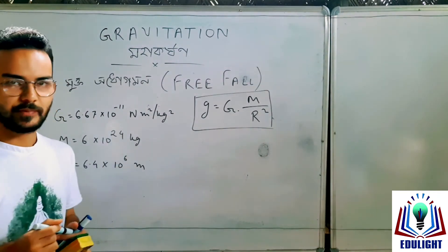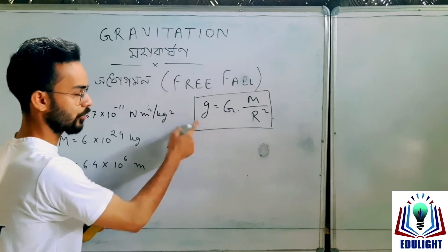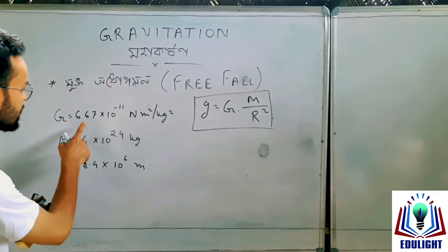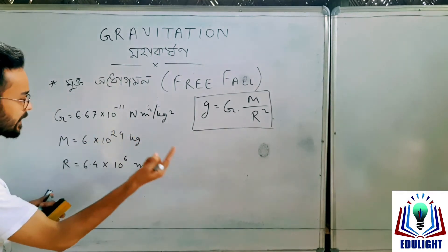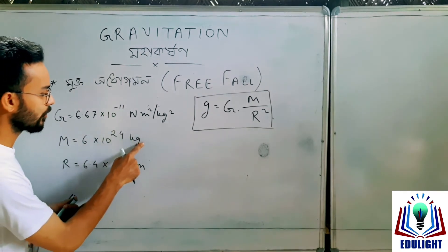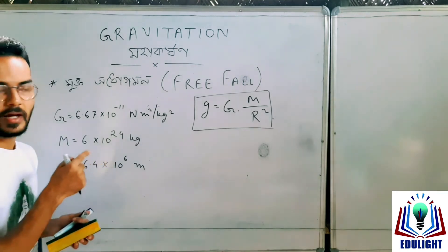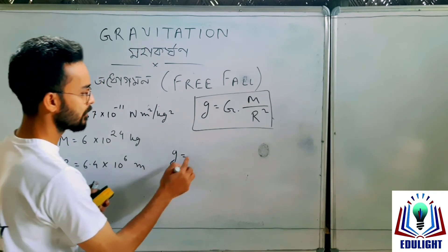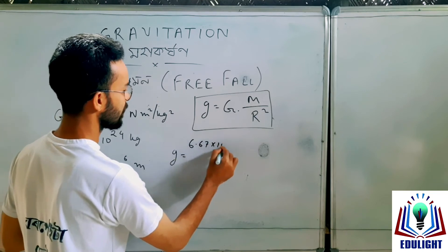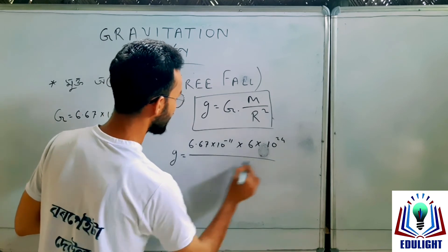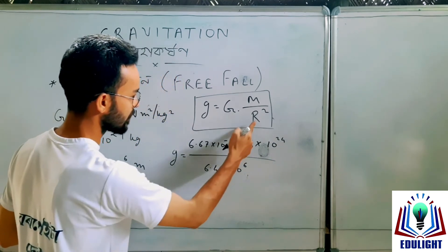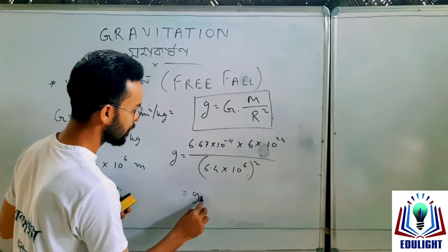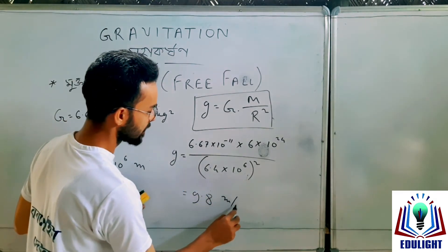Dear students, I can write the expression of g. g is equal to capital G times capital M divided by R squared. G is 6.67 into 10 to the power minus 11 Newton meters squared per kg squared. Capital M is 6 into 10 to the power 24 kg. R is 6.4 into 10 to the power 6 meters. So we can calculate for your expression — small g comes out to 9.8 meters per second squared.